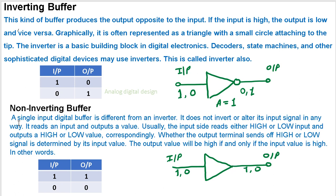By definition, a single input digital buffer is different from an inverter. It does not invert or alter its input signal in any way. It reads an input and outputs a value. Usually, the input side reads either high or low, and outputs a high or low value correspondingly.